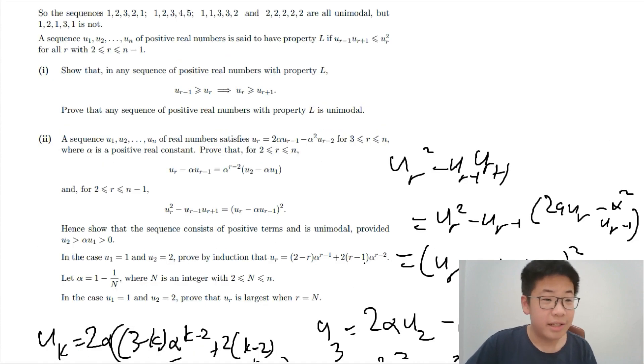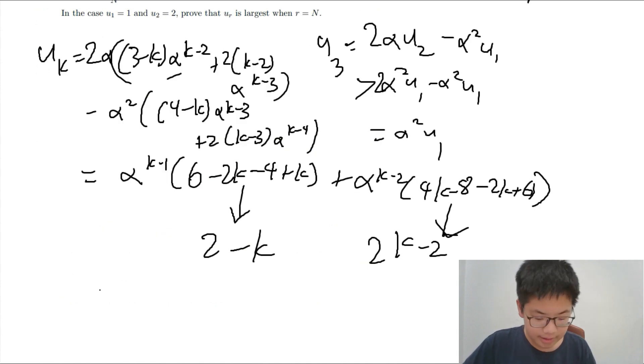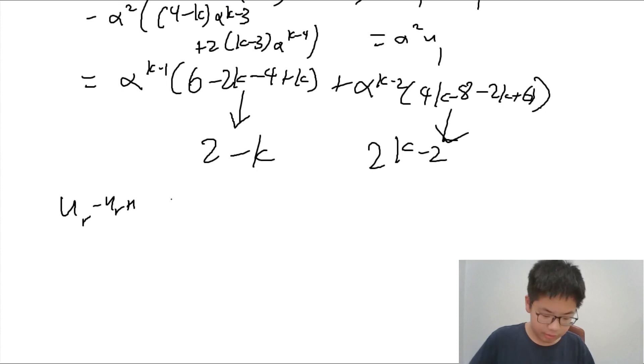Now, we are not done yet. So, let alpha is 1 minus 1 over N. So, this means that UR minus UR plus 1, if we substitute alpha, we have alpha to the R minus 2 over N squared, R minus 1 plus RN minus N squared.